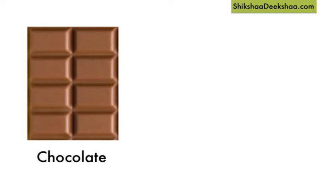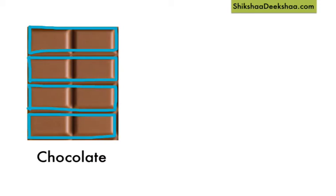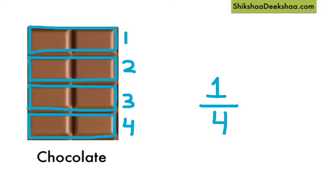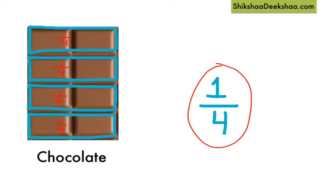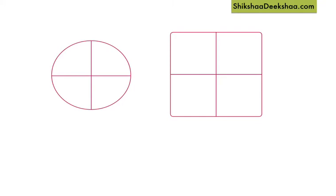This time let's divide the chocolate among four friends. We break it into four portions. Let's count the total number of portions: one, two, three, and four. So total portions are four, and your share is one portion of it, so each portion represents one by four of the chocolate.